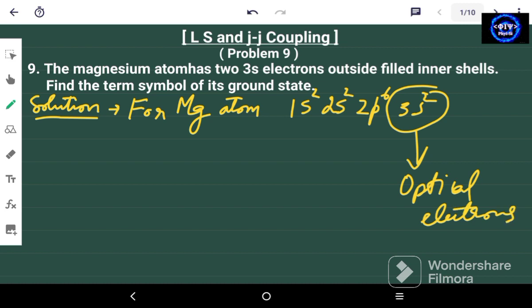We have two 3s electrons. We know that for the S subshell the maximum number of electrons are just two. So these two electrons must have opposite spins according to Pauli's exclusion principle.